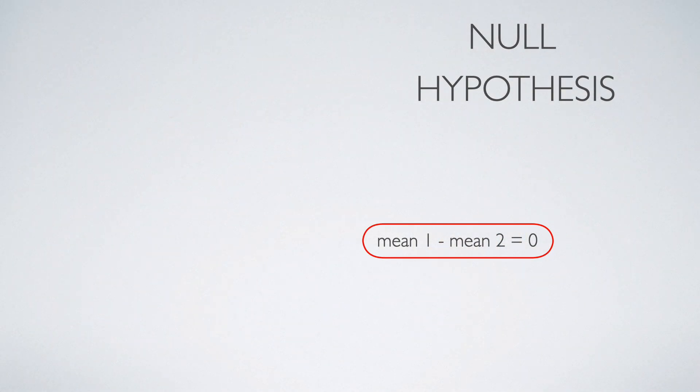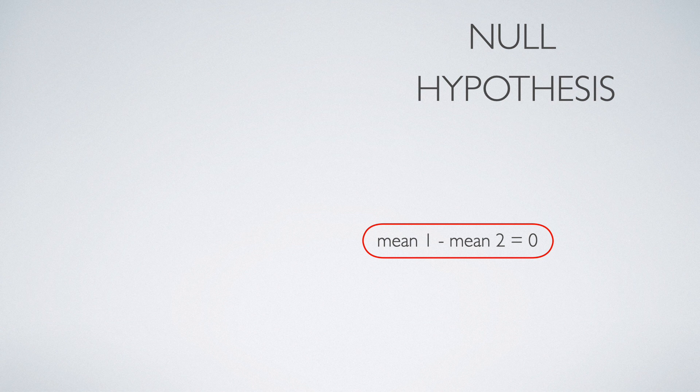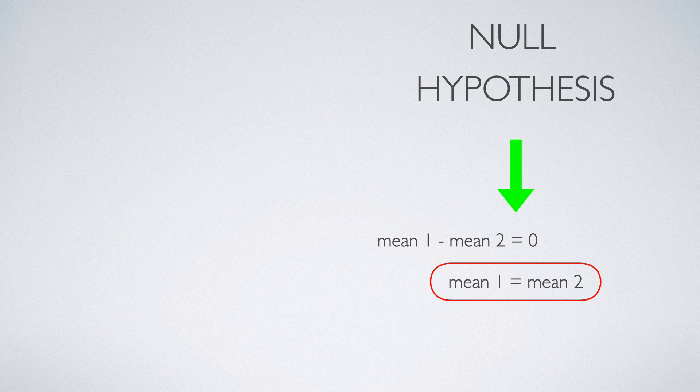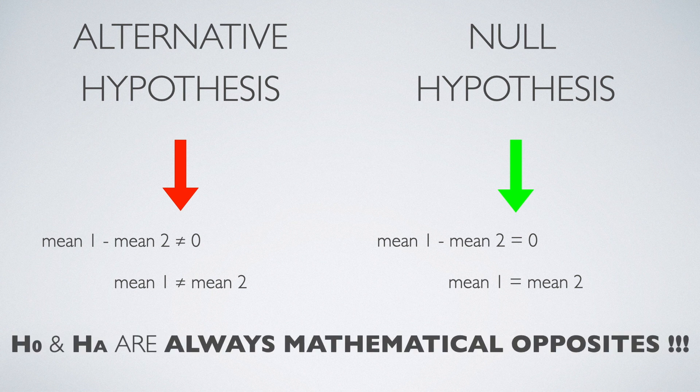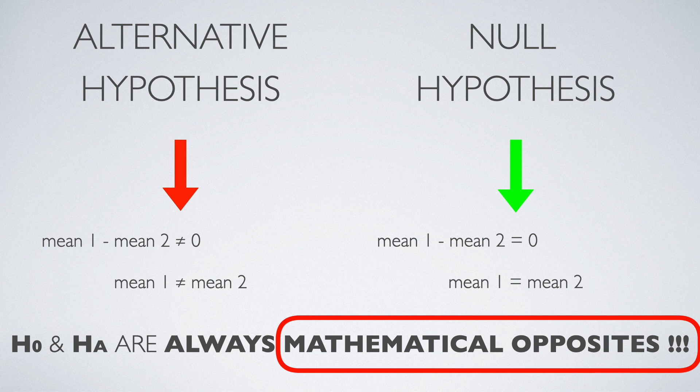Expressing such difference between averages of two groups mathematically literally means that the difference is equal to zero. And if we add mean two to both sides of the equation, we'll get that, which again means that if the difference between samples is equal to zero, then the averages of both groups are the same. For the alternative hypothesis, it would mean that samples or their averages differ. So the null hypothesis and the alternative hypothesis are always mathematical opposites, which makes the hypothesis testing really simple.